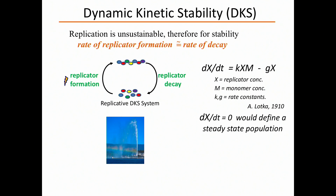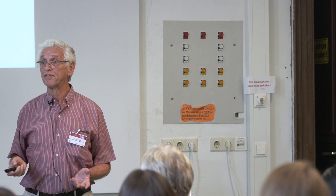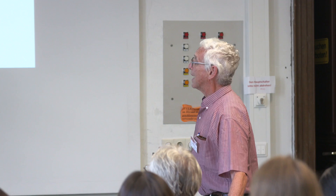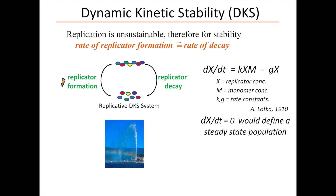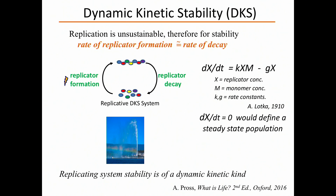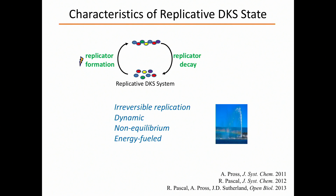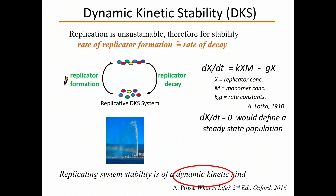A very simple physical metaphor illustrates the idea — the fountain in Geneva. It's stable, persistent — whenever you go to Geneva, it's there. But the water that makes up that fountain is turning over all the time. In the same way, a replicating population is stable, but the entities that make it up are turning over all the time. The replicating system's stability — this dynamic kinetic stability — is of a dynamic kind, as opposed to the static kinetic stability of hydrogen and oxygen.